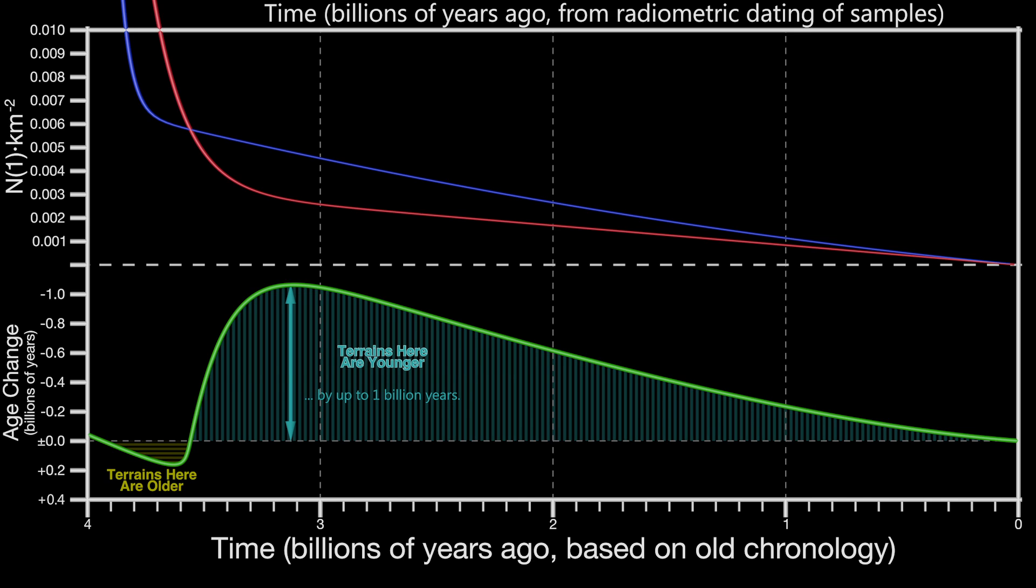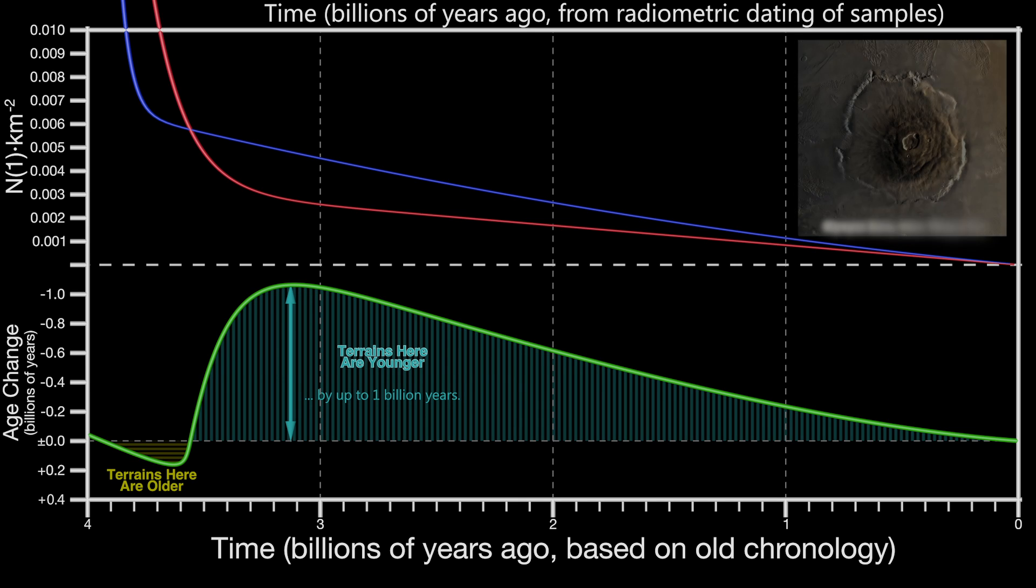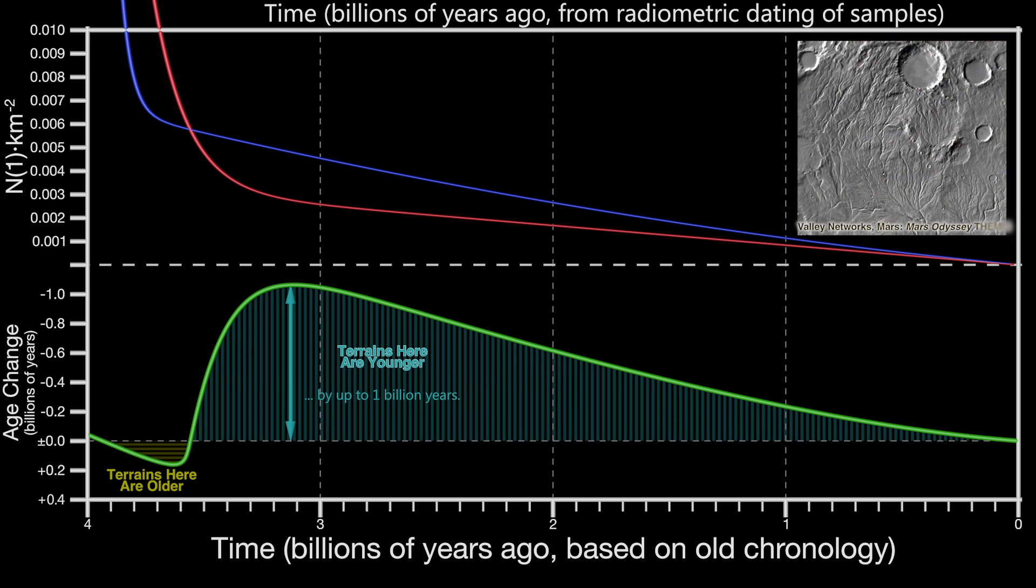What does this mean for solar system processes? It means that, in general, events occurred more recently than previously thought. For example, the volcanism on Mars and Venus that we think died out a few hundred million years ago persisted perhaps halfway closer to the present day, or that lakes and rivers on Mars could have been flowing several hundred million years more recently.